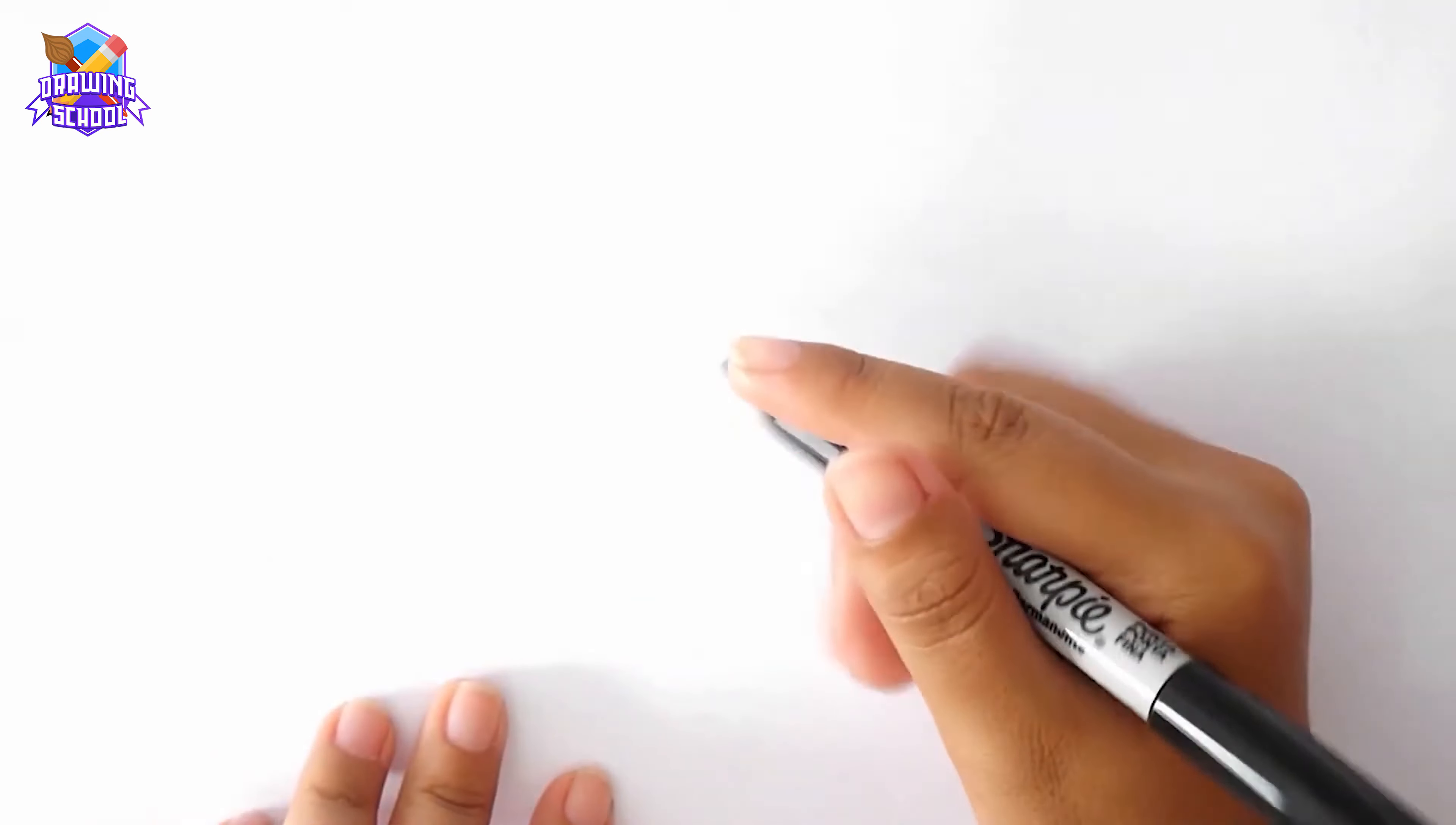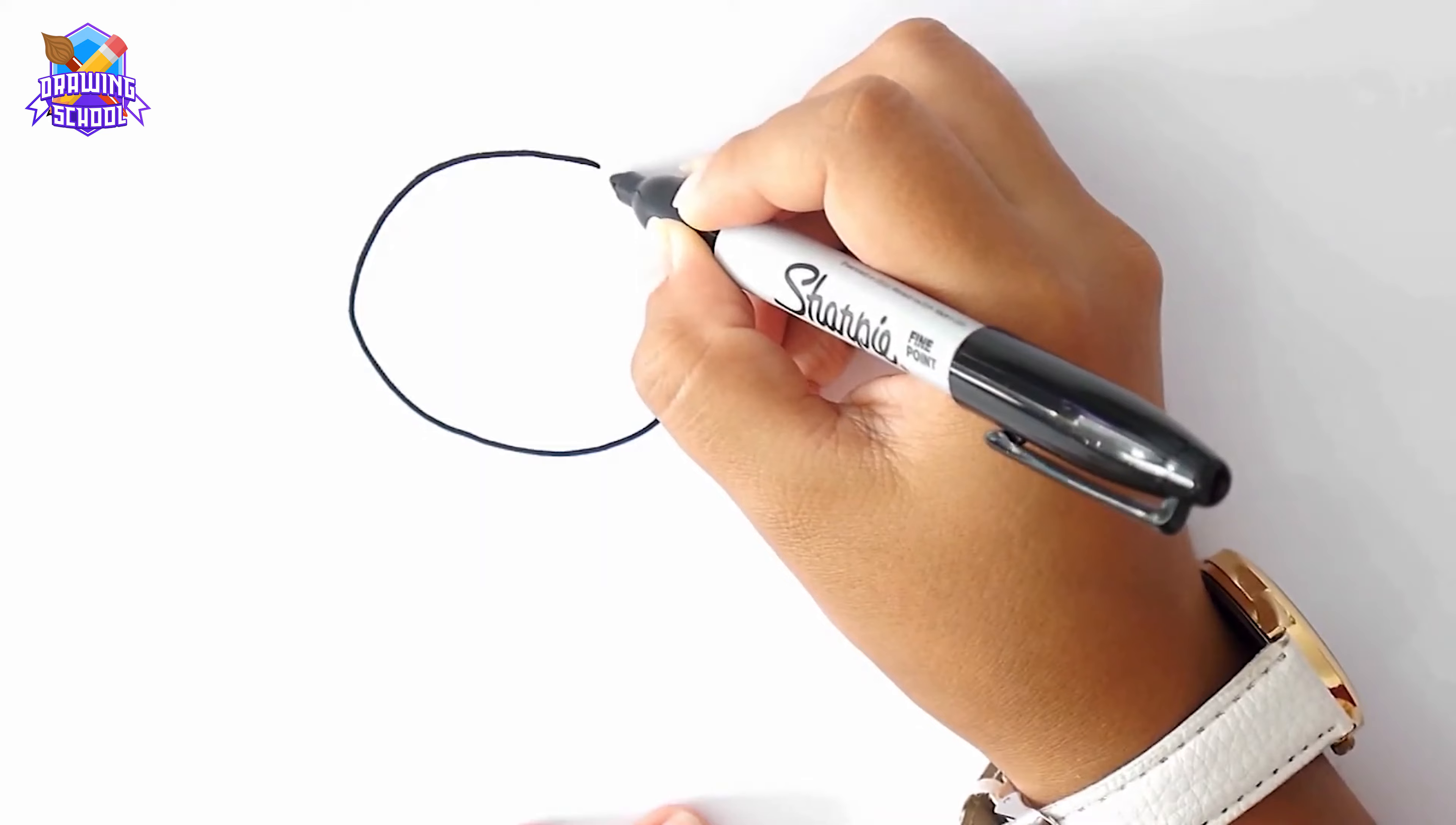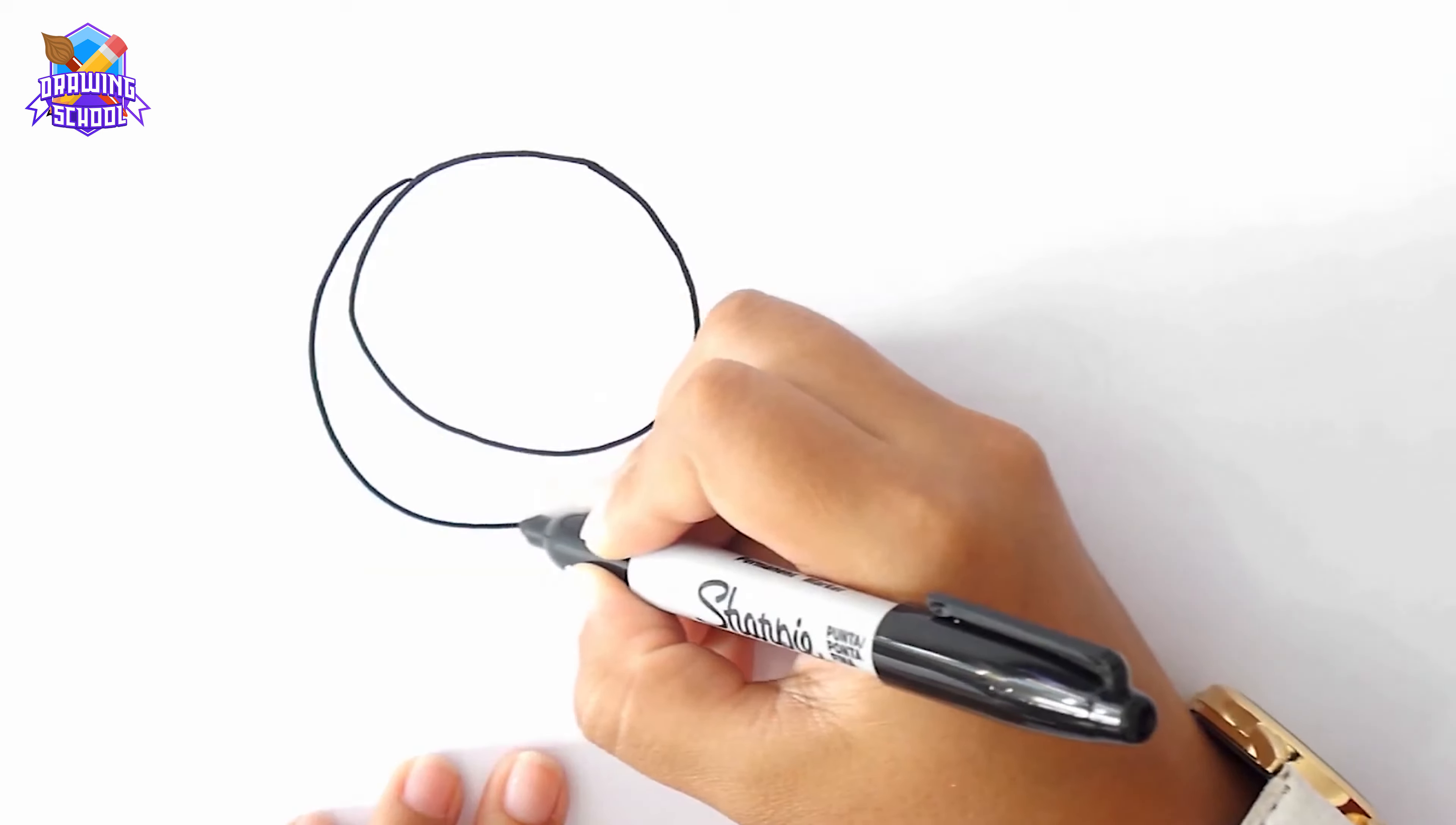First of all, I'm going to start drawing a circle like this. Then I'm going to draw a C shape all around the circle, starting from the middle up to here.